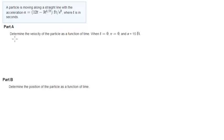Right now we're going to do this problem which says that a particle is moving along a straight line with the acceleration of 12t minus 3t to the 1/2 feet per second squared where t is in seconds. They want you to find basically a function for the velocity and a function for the position, which is super easy.